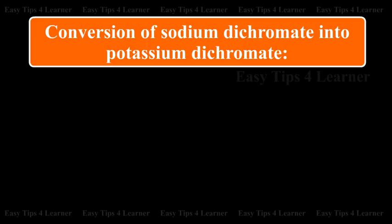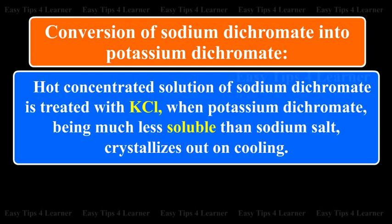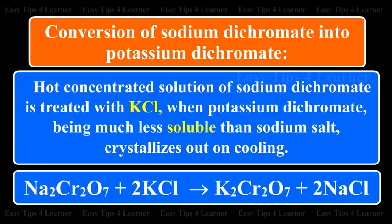Step 3: Conversion of sodium dichromate into potassium dichromate. A hot concentrated solution of sodium dichromate is treated with KCl. Potassium dichromate, being much less soluble than the sodium salt, crystallizes on cooling. Na2Cr2O7 + 2KCl gives K2Cr2O7 + 2NaCl.